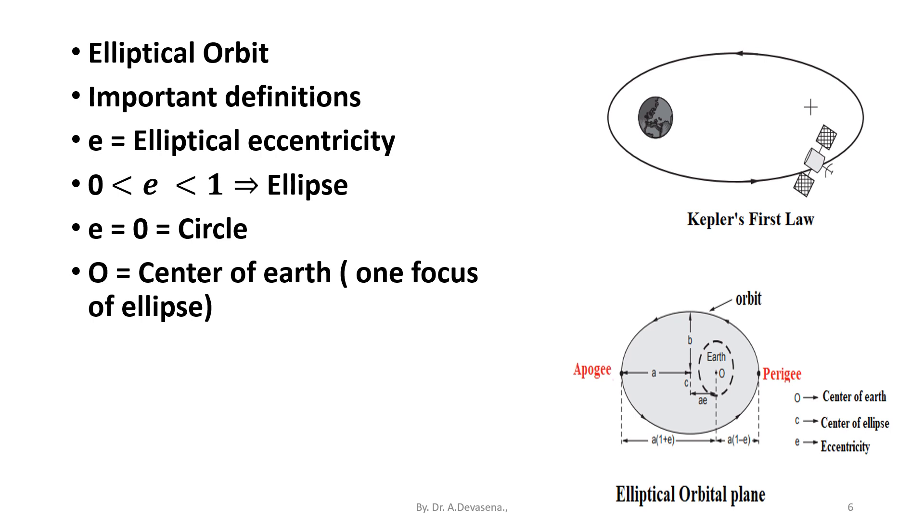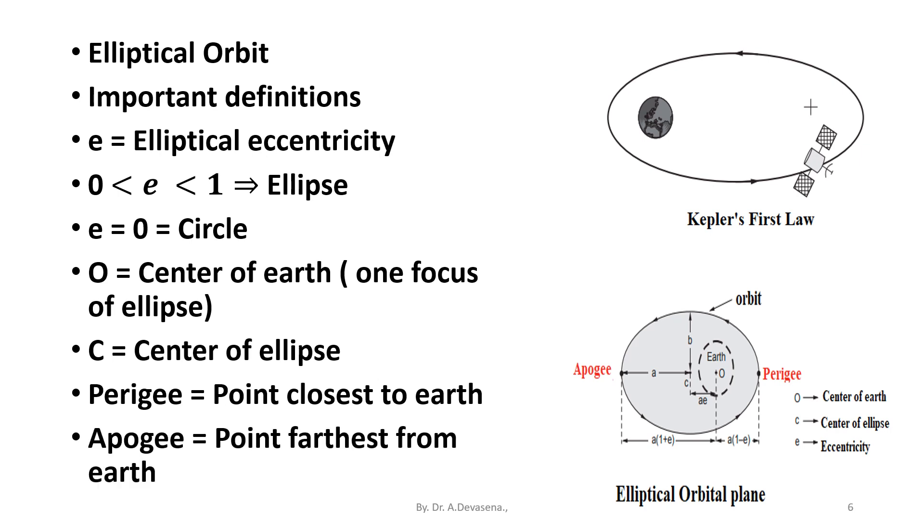O is the center of the earth, one focus of the ellipse. C is the center of the ellipse. Perigee, the point closest to the earth. Apogee, the point farthest from the earth.